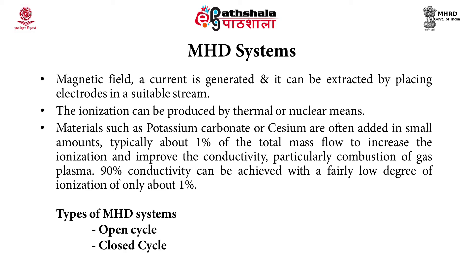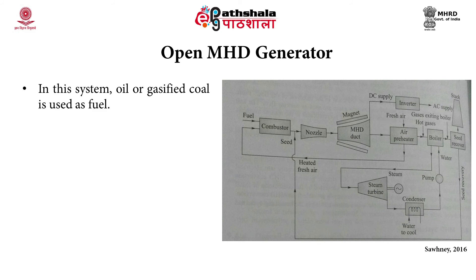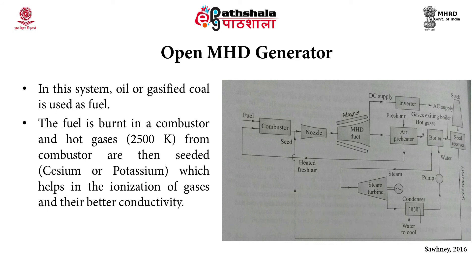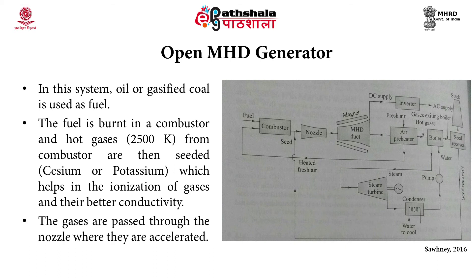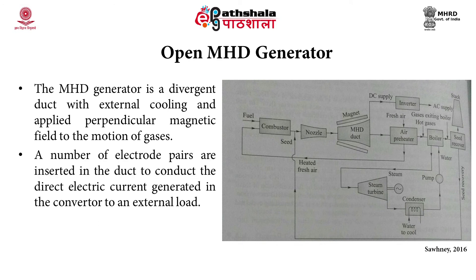There are two types of MHD systems: open cycle and closed cycle. In the open cycle system, oil or gasified coal is used as fuel. The fuel is burned in a combustor, producing hot gases at around 2500 Kelvin. From the combustor, the gases are seeded to help ionization and improve conductivity, then passed through a nozzle where they are accelerated. The MHD generator is a divergent duct with external cooling and an applied perpendicular magnetic field. A number of electrode pairs are inserted in the duct to conduct the direct electric current generated to an external load.